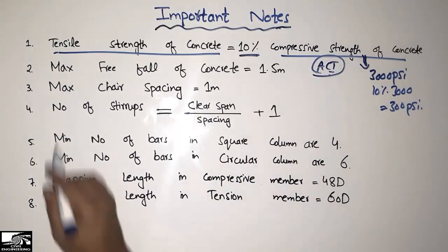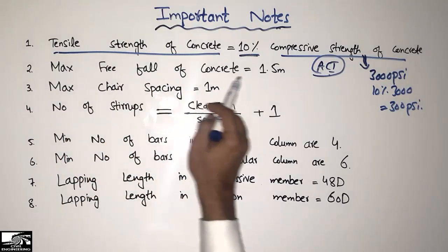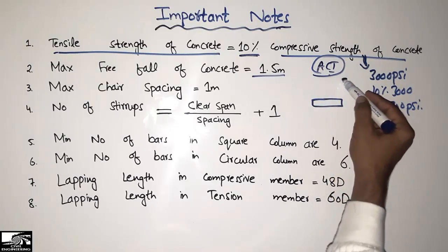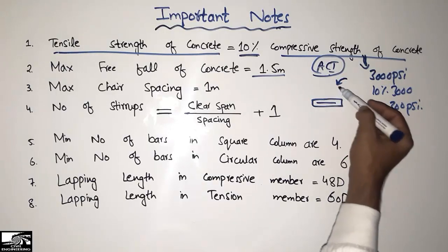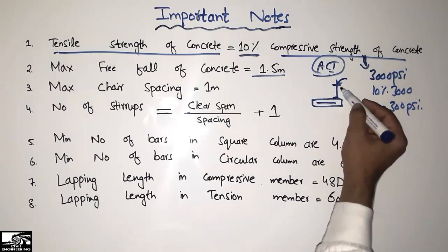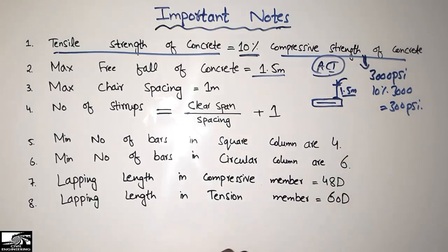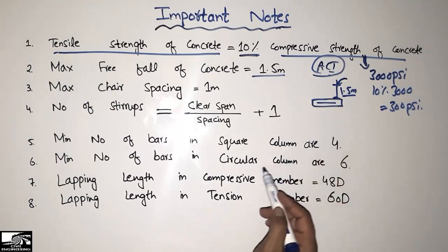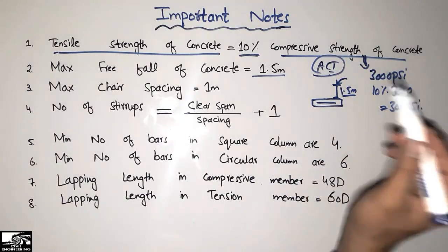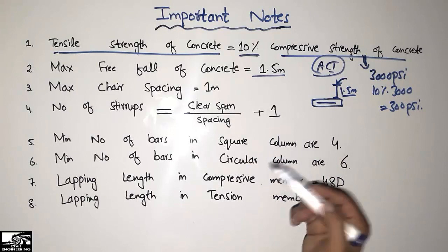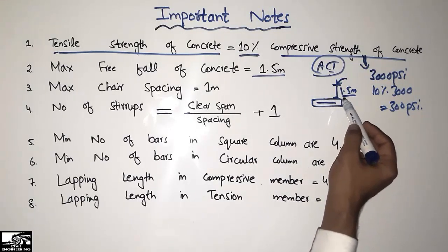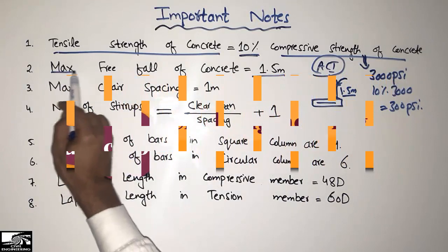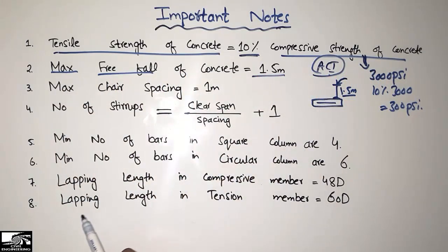The second point is that the maximum free fall of concrete is taken as 1.5 meters. When you pour concrete into a structural member such as a beam, the distance of the pour should be a maximum of 1.5 meters according to standards. If the free fall distance is greater than 1.5 meters, segregation of the concrete occurs — the coarse aggregate separates first, then cement, then water. So you should always keep the maximum free fall distance of concrete to 1.5 meters.